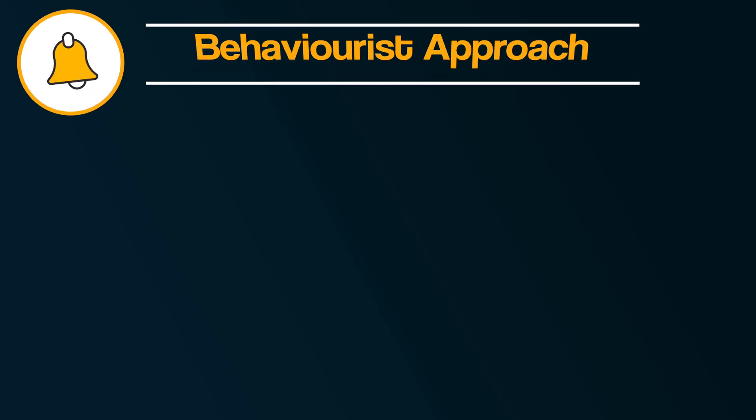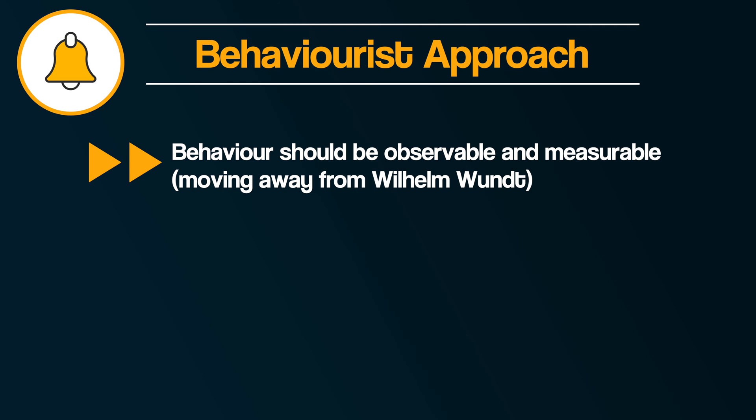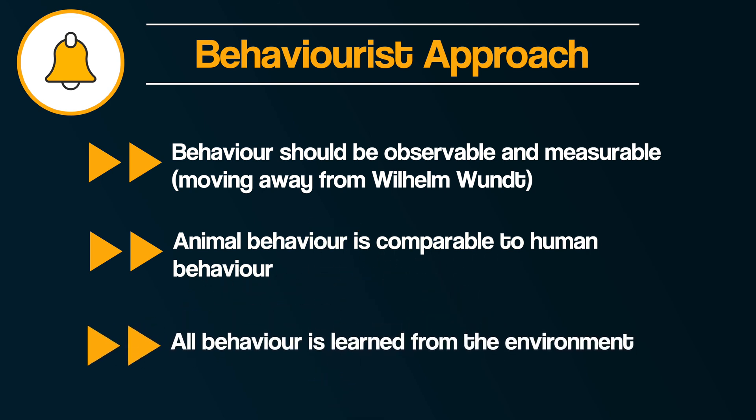For John B. Watson, he took the view that the shaping of the environment that a person was in was the key factor to understanding behaviour. According to the behaviourist approach, behaviour should be observable and measurable, moving away from Wilhelm Wundt's introspection method. Animals and humans are comparable — we can study animals and learn about human behaviour. All behaviour is learned from the environment. This strong focus on the environment often sees behaviourists refer to humans as tabula rasa, Latin for blank slates.